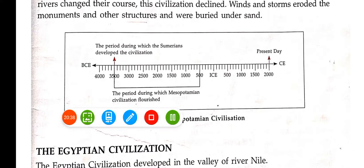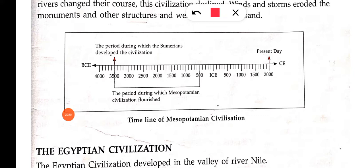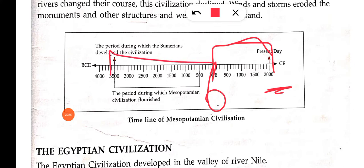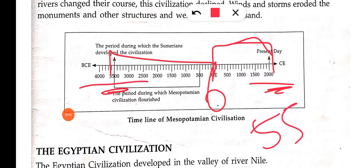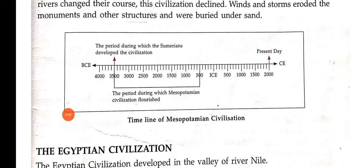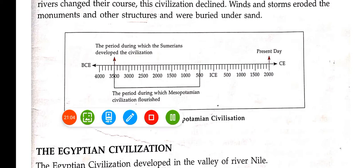So students, this civilization started around 3500 BCE. We are in 2000 CE, so 2000 + 3500 = this civilization is about 5,500 years old. It lasted until 500 BCE. So students, I am ending this video here. We will discuss Egyptian civilization in the next video.